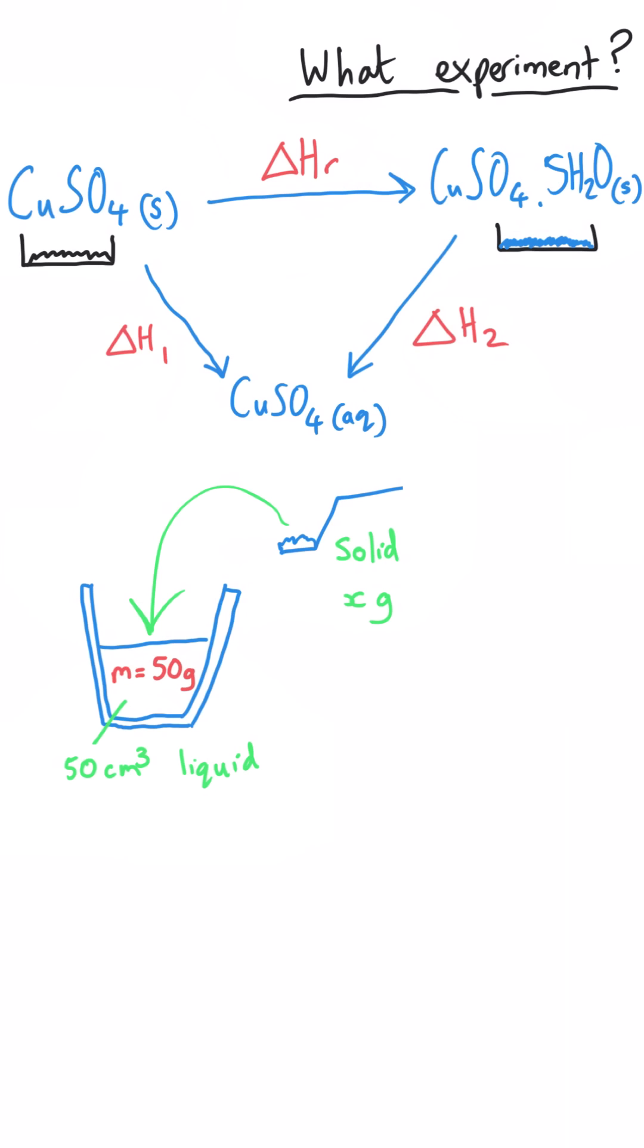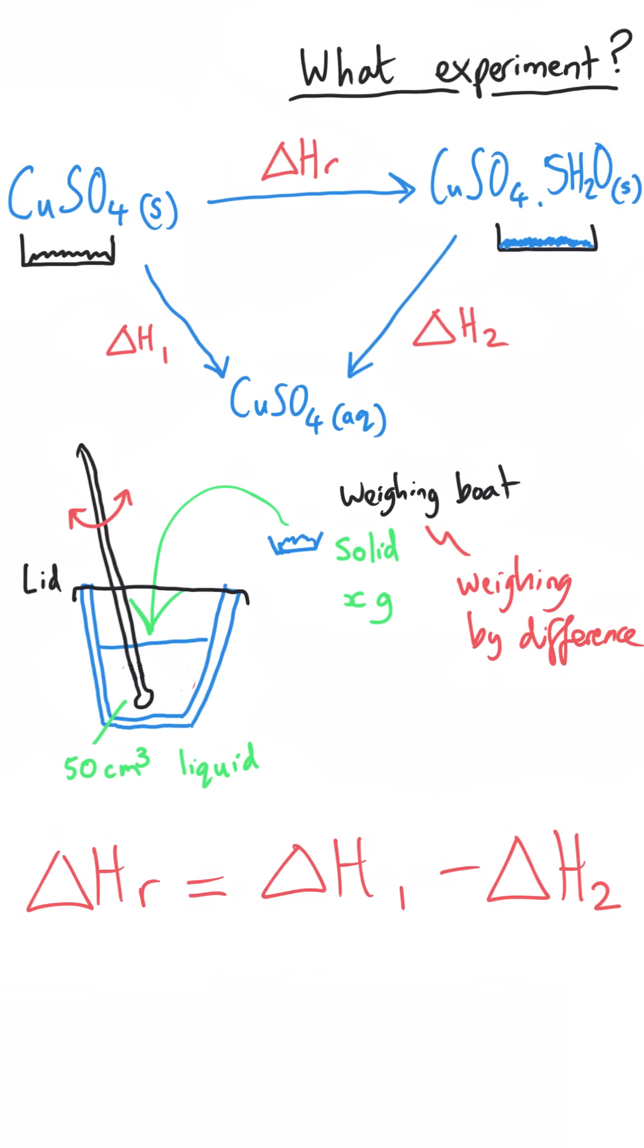And then, as before, the enthalpy change for this reaction is equal to delta H1 minus delta H2. And so they could get you to describe how you would do this experiment. And I've made a question walkthrough video that does just that, testing those skills about the practical technique. I'll put the link in the description to this video. Or they could get you to analyze data and actually calculate one of these enthalpy changes, and they'd probably give you the other and get you to work out the enthalpy change for this reaction that can't be measured directly. And that's because you can't be sure that you're adding precisely five water molecules rather than four or maybe six.